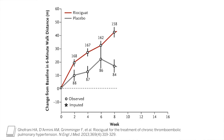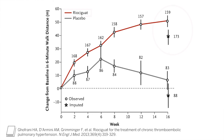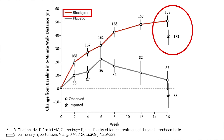Riociguat is a medication also used for group one disease. However, when used in patients with underlying CTEPH, there has been demonstrated improvement in six-minute walk distance. This medication is typically used for those deemed to not be surgical candidates but still have evidence of pulmonary hypertension, as well as evidence of chronic thromboembolic disease on either VQ scan or other imaging modalities.